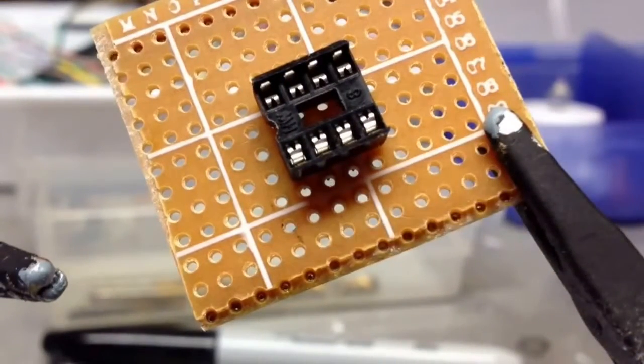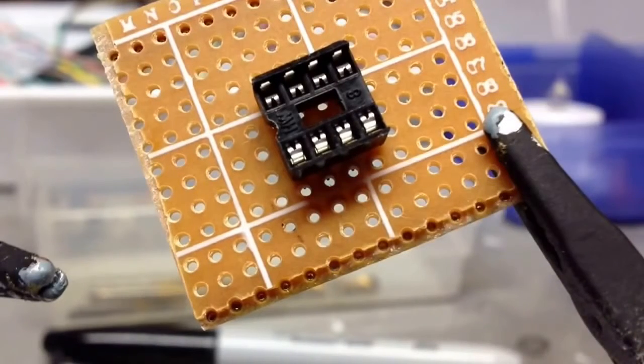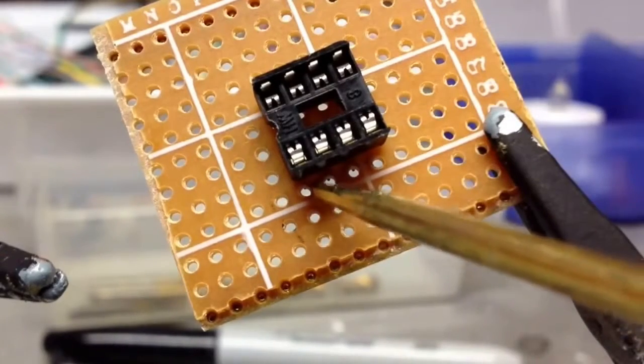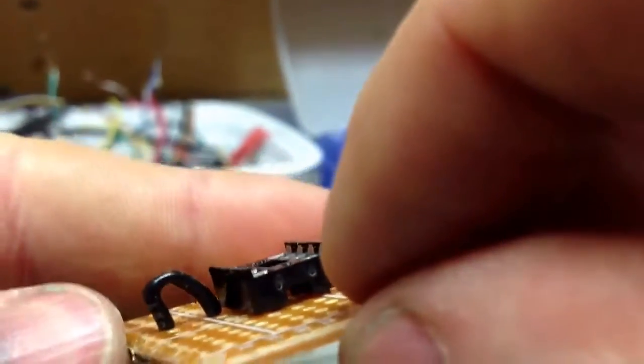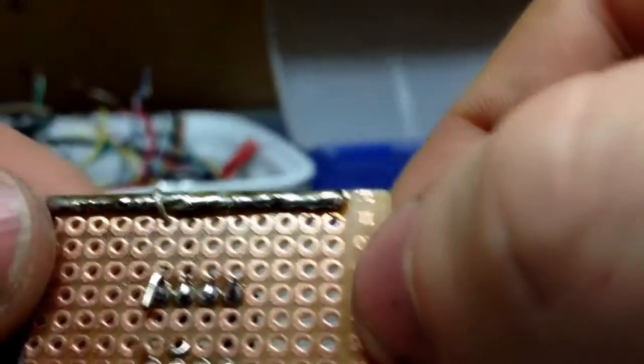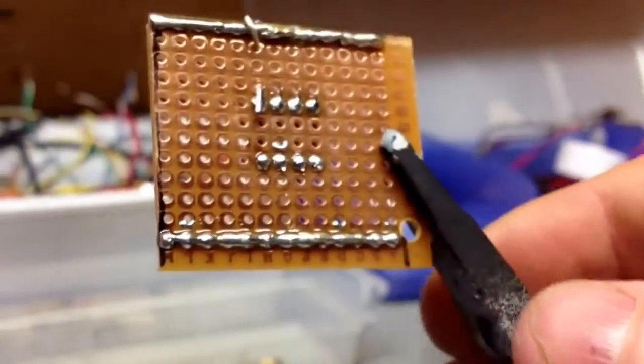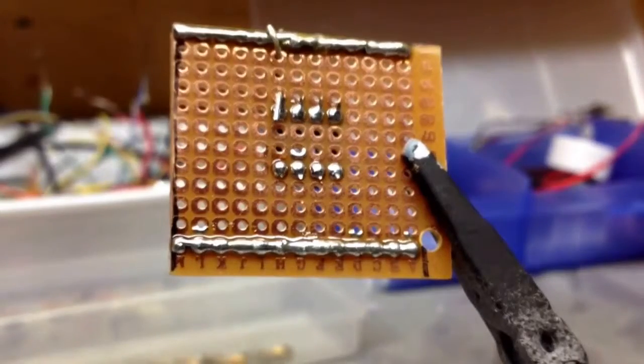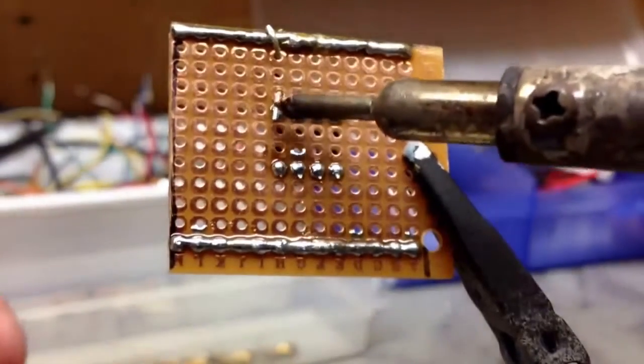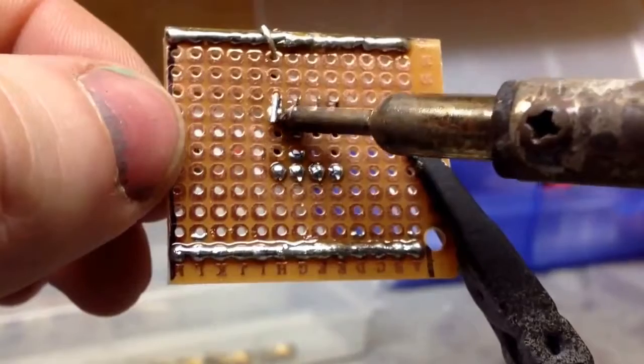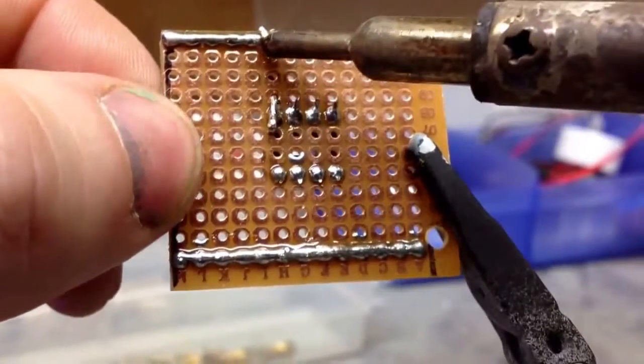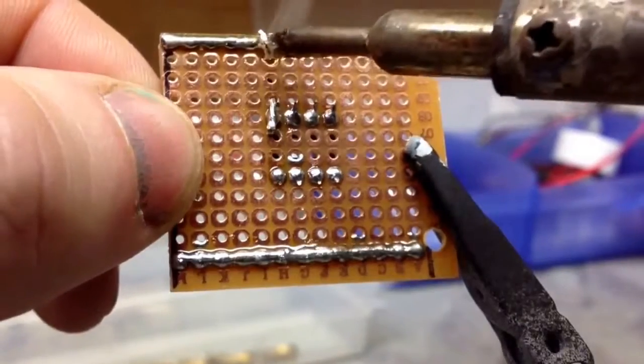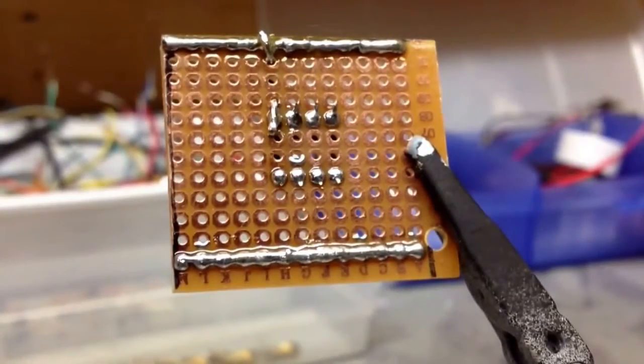The first thing we're going to do is run a wire from pin one to ground. We got our wire from pin one to ground and that needs to be soldered. Now I did pre-tin these, so I don't actually have a lot of work to do. Just like that.